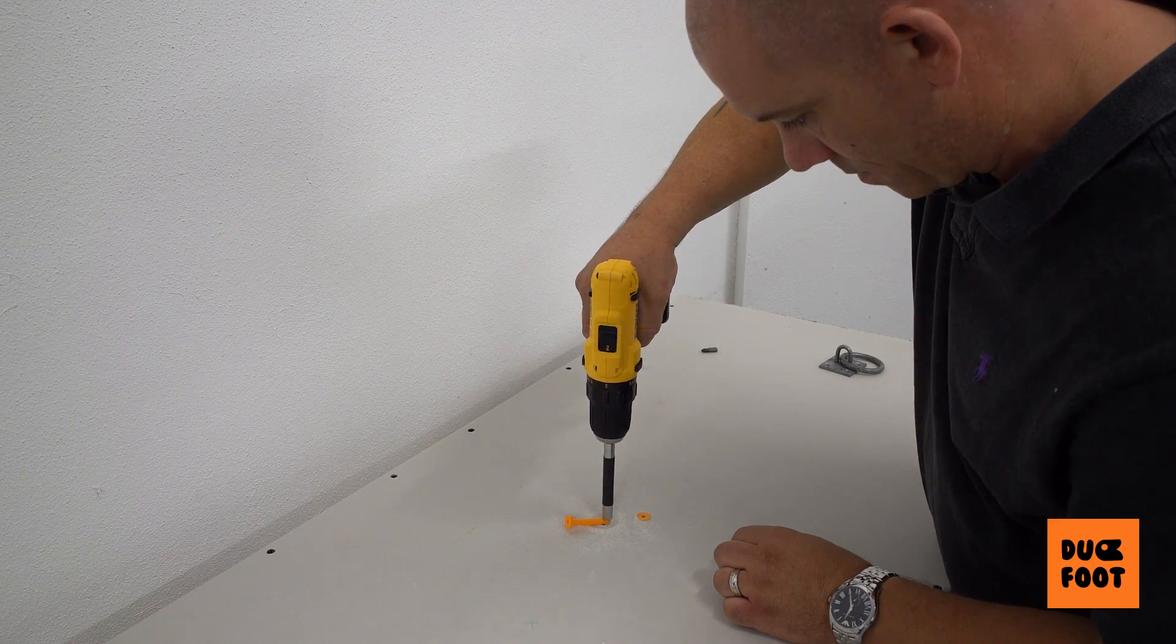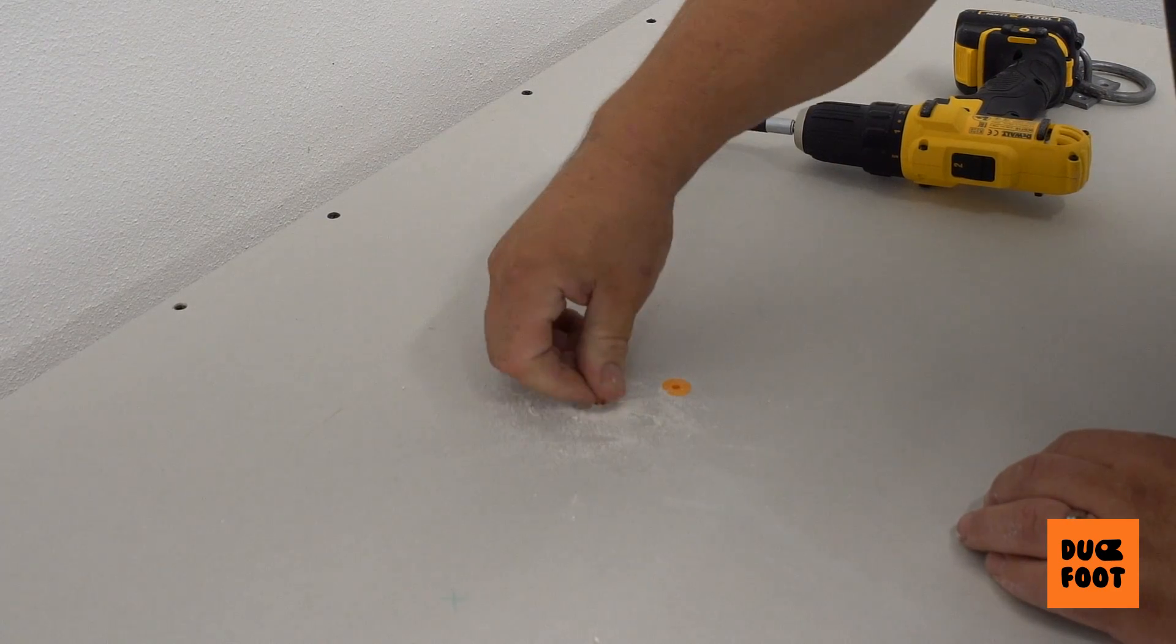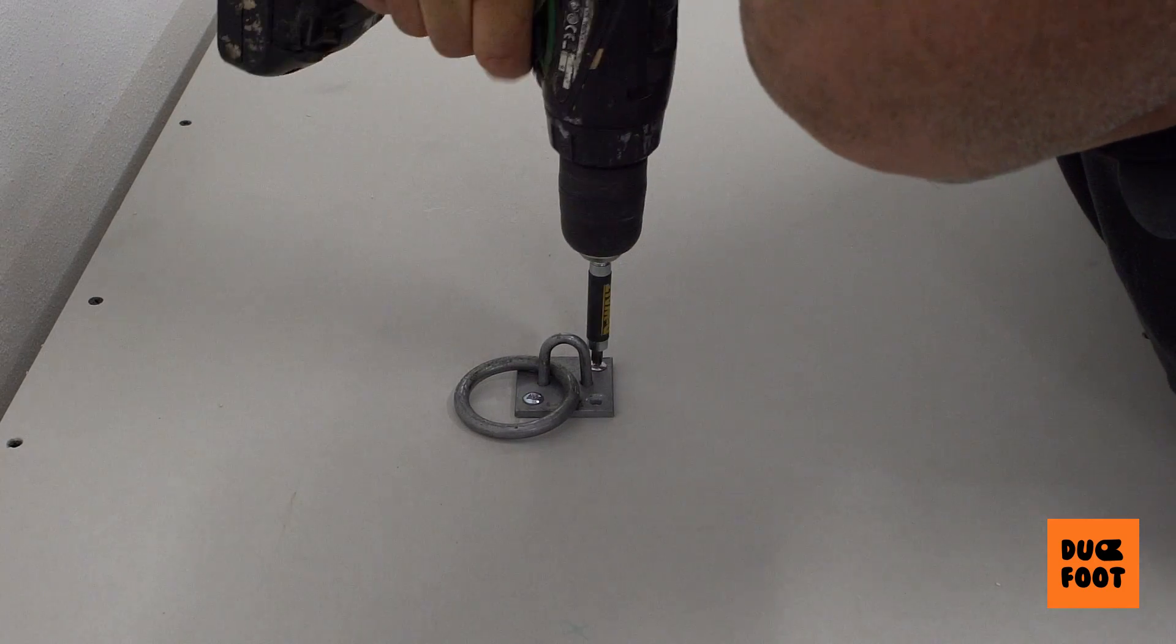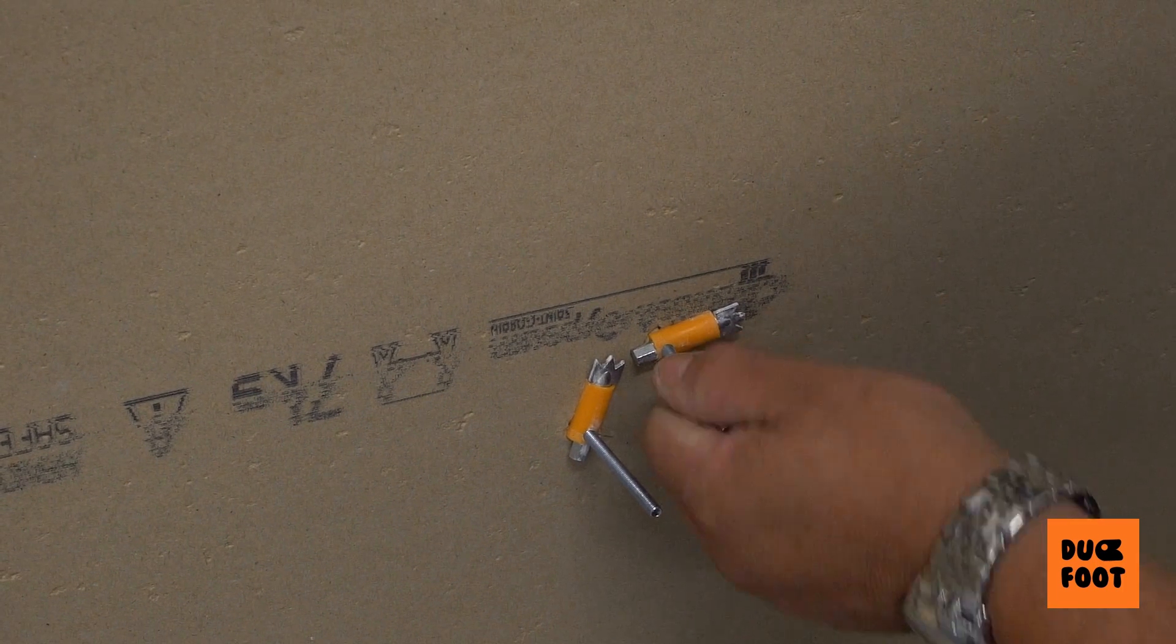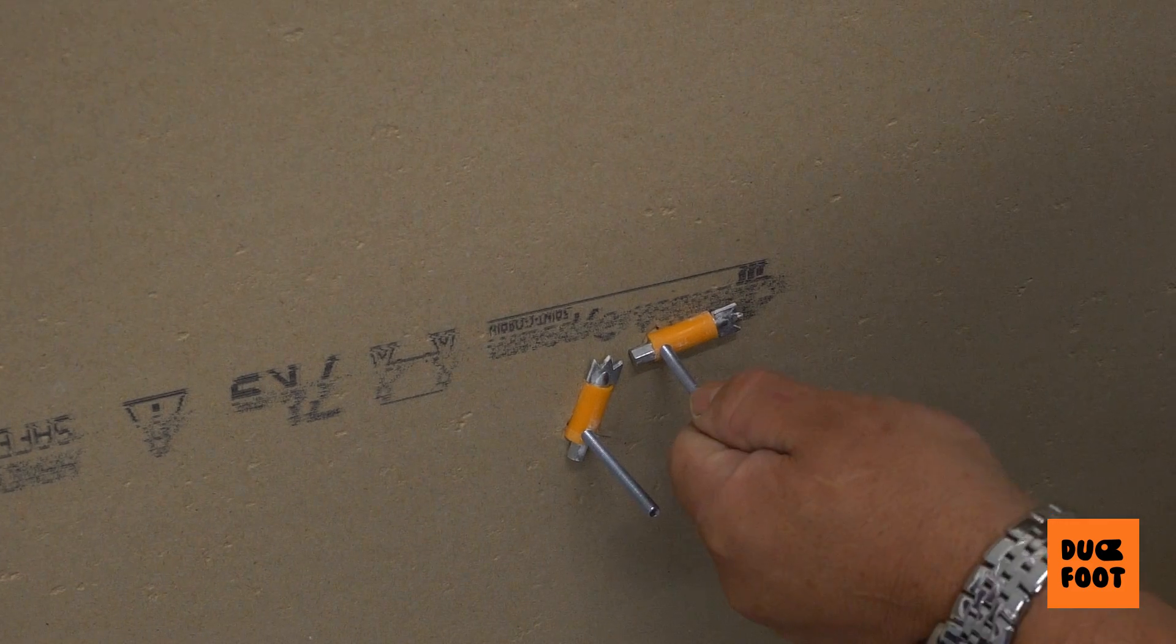As you can see, the duck foot anchor is through. We simply pull it out a little bit, bend it, push it in, and plug it in. As you can see, both the duck foot anchors are completely flat and secure, and they're not wobbling or moving anywhere.